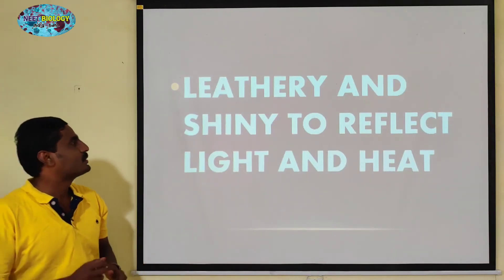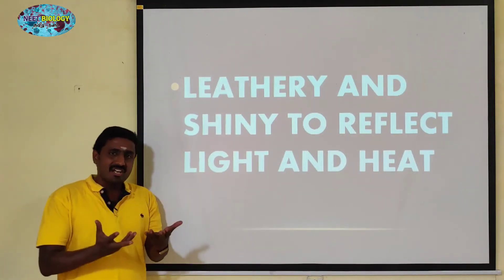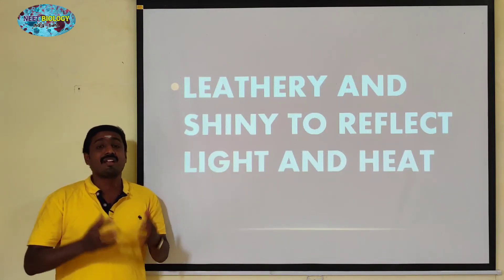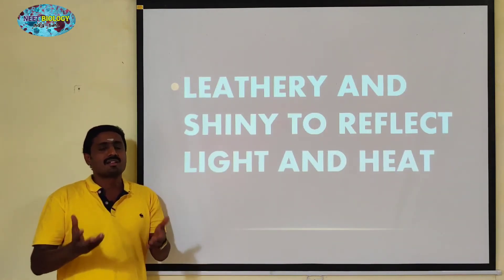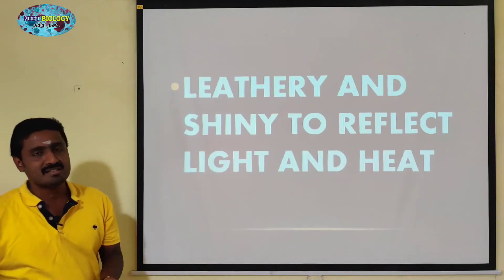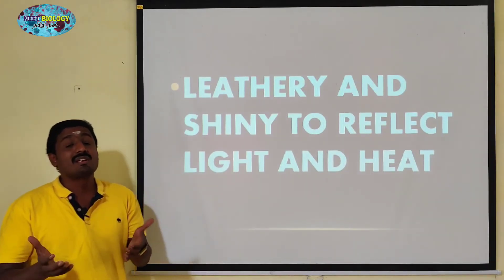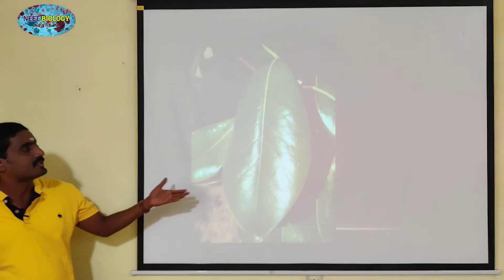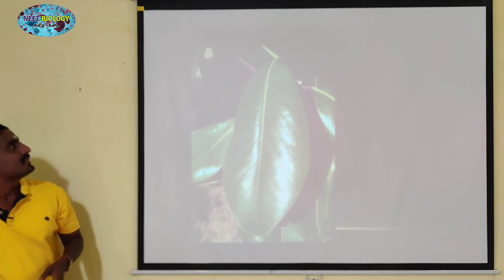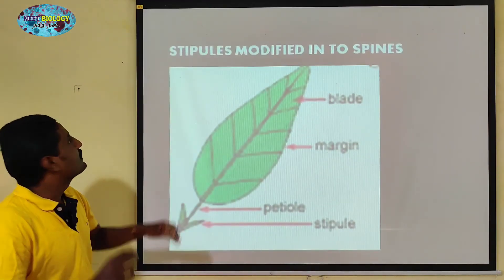Leathery and shiny leaves reflect light and heat. Why are they shiny? We can see a wax coating on them. The wax coating works the same as sunlight — it is the more-heat-resistant feature of the plant, reflecting the sunlight to protect themselves from the heat.